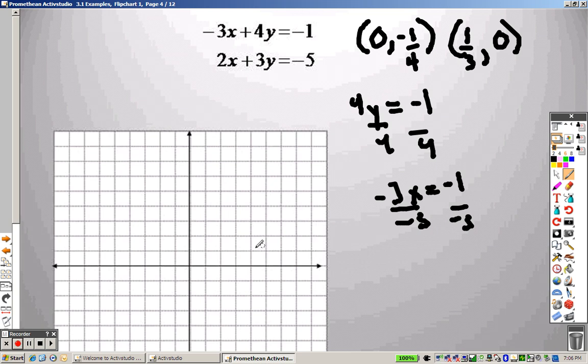Why does that help me? That means I plot the point right here at (0, -1/4), and I plot a point at (1/3, 0). And this is my line.